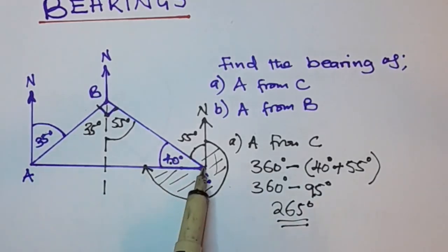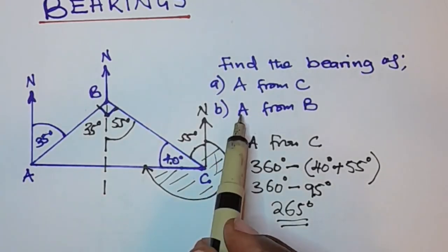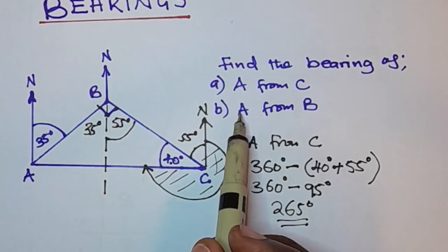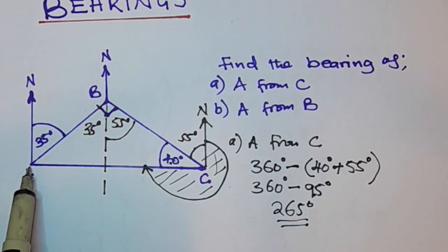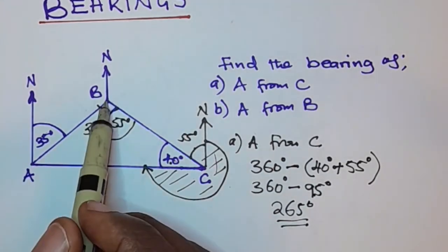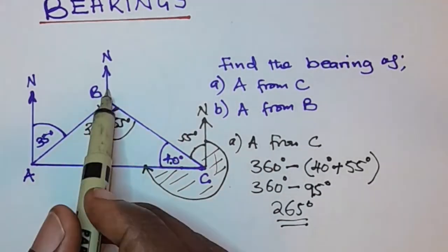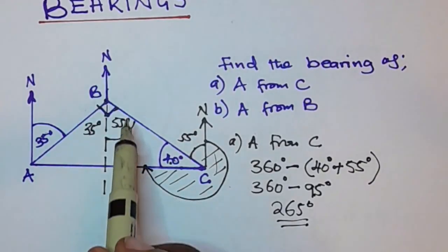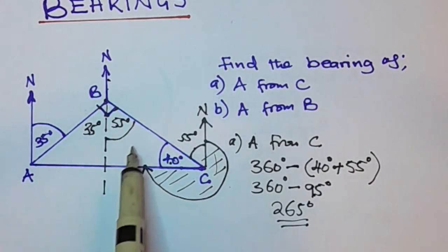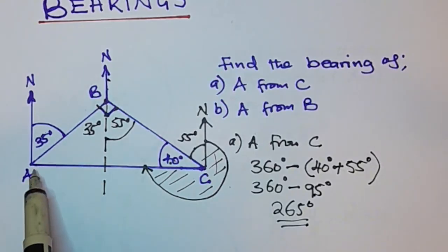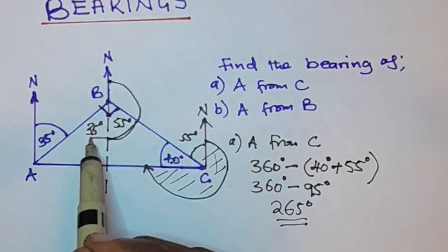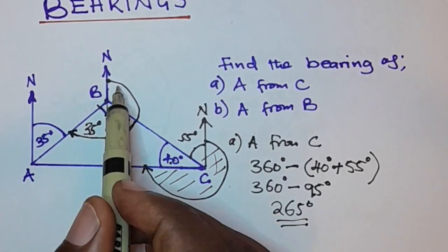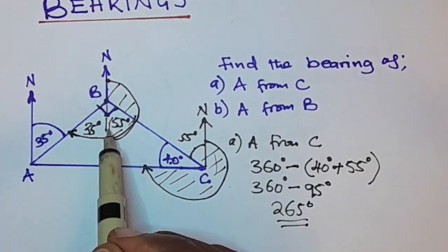Part B: find the bearing of A from B. That means the bearing of A whilst you are standing at B. We already have a north line here, so we are going to move clockwise from the north until we reach the line AB, moving like this until we reach this line. The bearing they are looking for is this angle here.